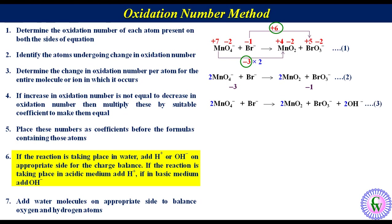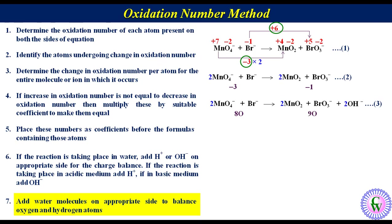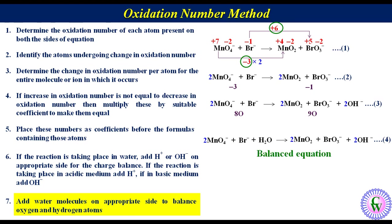In the last step, we add water molecules on the appropriate side to balance oxygen and hydrogen. There are 8 oxygen atoms on the left and 9 on the right, so we add one water molecule on the left. The equation becomes: 2MnO4⁻ + Br⁻ + H2O → 2MnO2 + BrO3⁻ + 2OH⁻ (equation 4). In this equation, hydrogen is already balanced, so this is the balanced redox reaction.